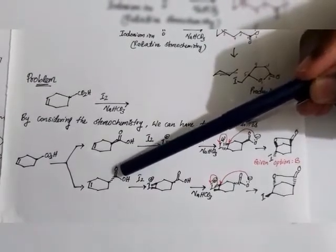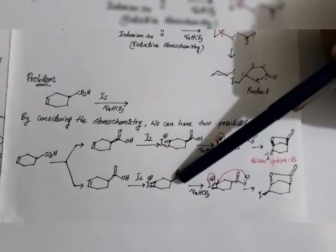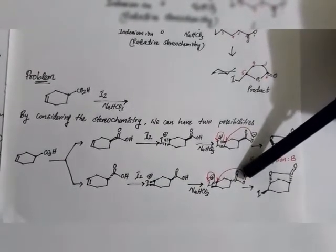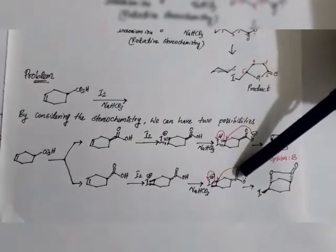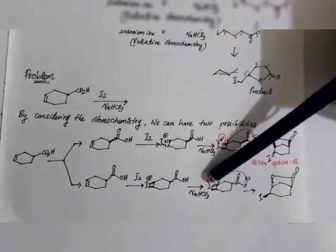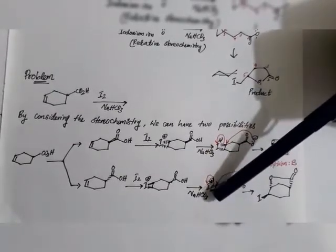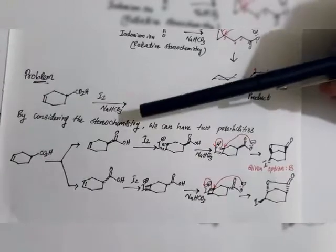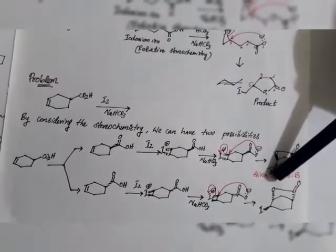In the second situation, the carboxylic group is in dash — below the plane of paper. Halogenation takes place above the plane because the bulky group is below. On deprotonation, we get the carboxylate nucleophile below the plane of paper. It attacks the electrophilic center from below the plane, the bond cleaves, and iodine remains in wedge — above the plane of paper. According to the given options, the correct answer is option B. Thank you, take care.